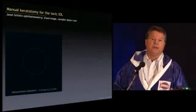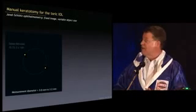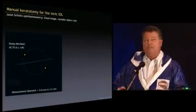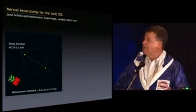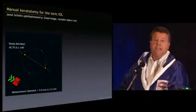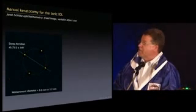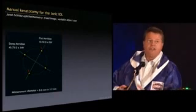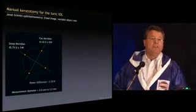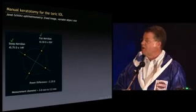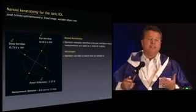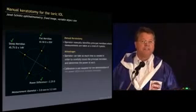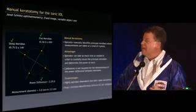So why does a manual keratometer work so well? This is what the manufacturer recommends. If you're off on your axis, you actually get a picture and you get told that you're in the wrong place. When you're in the right place, you get a good picture. Here's the steep axis, or steep meridian, and the flat meridian — what we're looking to do is tell the power difference to give us what we need for the toric IOL. With a manual keratometer you're only measuring four places, but it turns out they're the right four places with the right information.